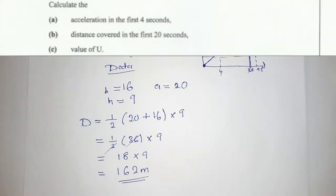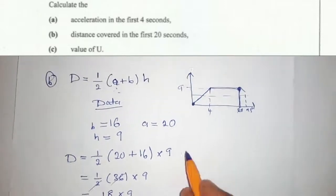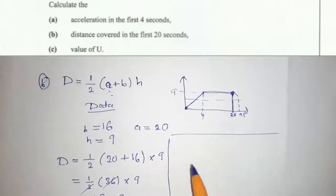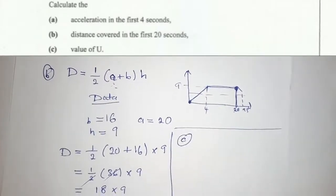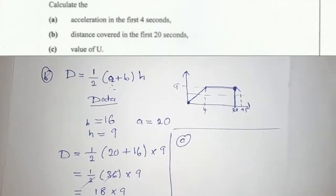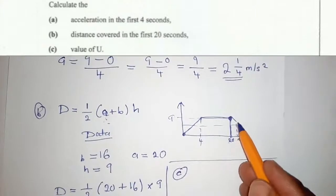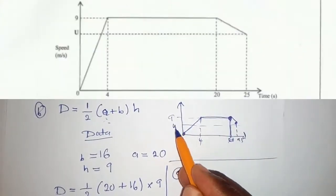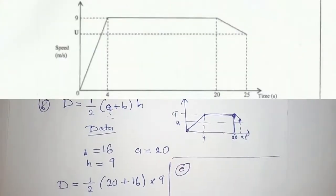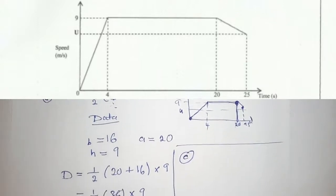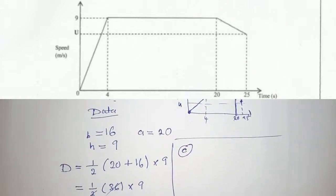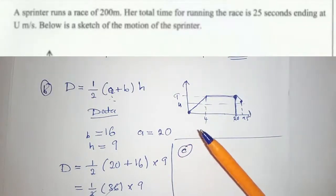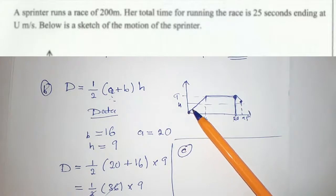which is question C. For question C, they want us to find the value of U. Remember U is somewhere here. So we're going to use the statement in the equation where this person runs from here to here,